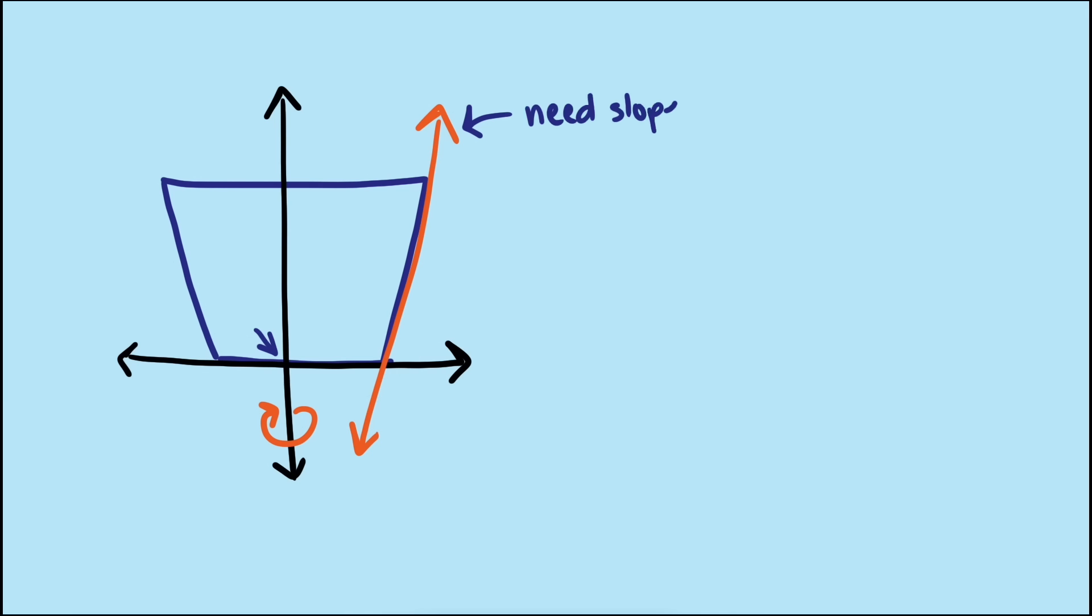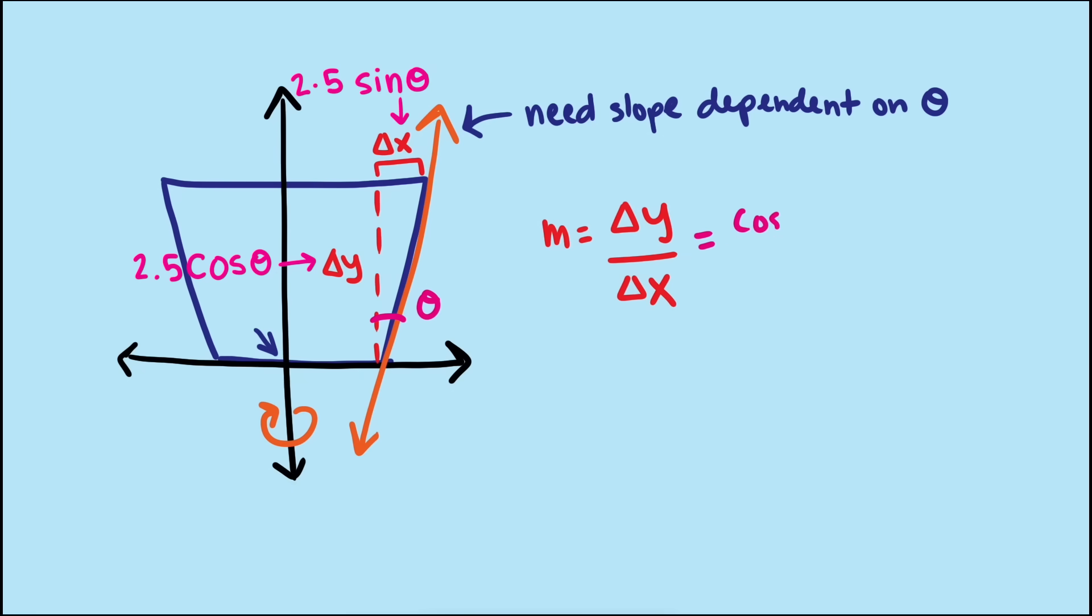Let's start by finding the slope of that line, which is dependent on the angle. We could do this from scratch with these points. Or if we're clever, instead of using a formula, we can think of the meaning of the slope as the ratio of the change in the y direction, which is the height, and the change in the x direction, which is this horizontal leg of the triangle. And that ratio simplifies to just cotangent of theta.